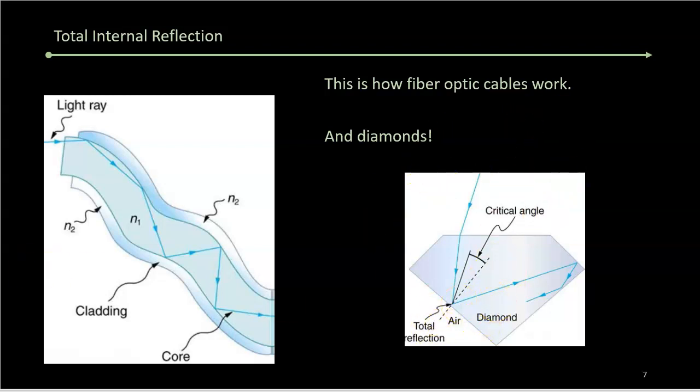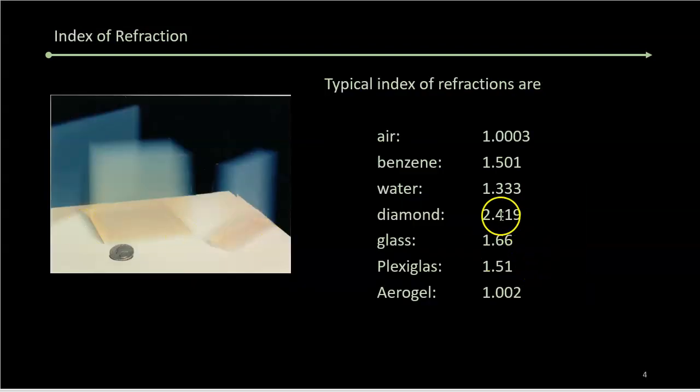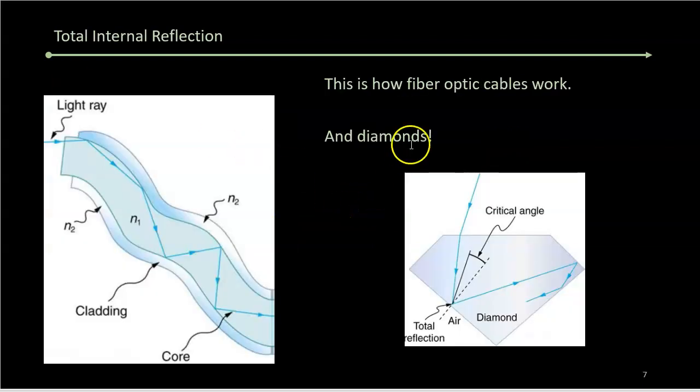if you remember, the index of refraction for diamond is really high at 2.4. So diamonds are cut so that light comes in and it bounces around inside.